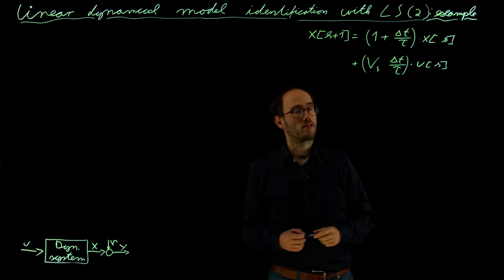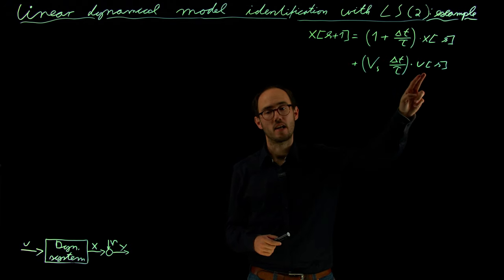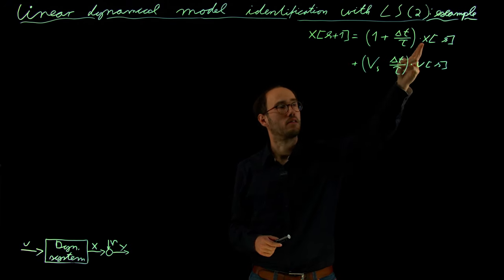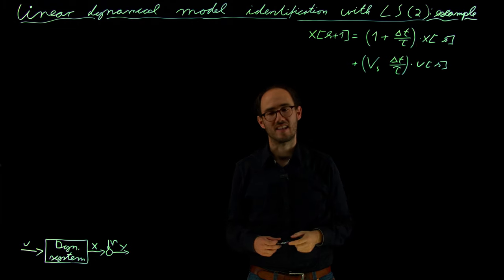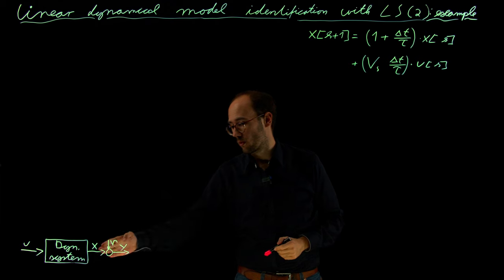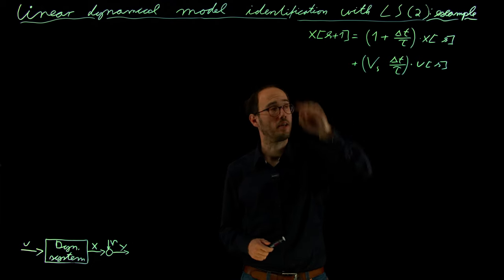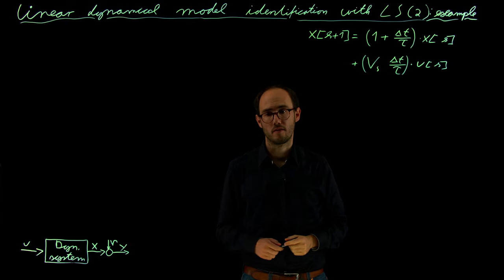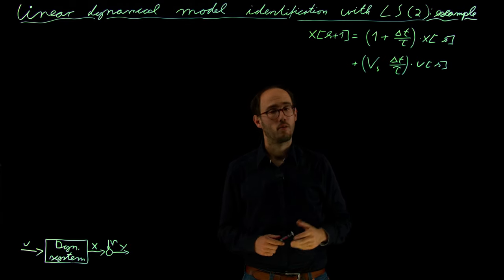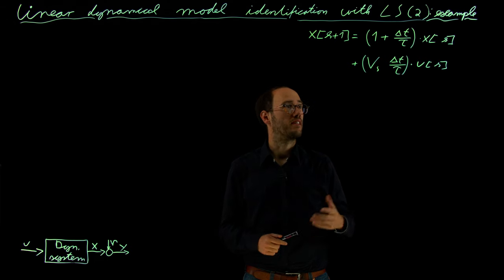In this video, we are considering a single input, single output system. That means that our input u is a scalar input and our state, which is also here considered as the output of our dynamical system which we want to identify, is also just a scalar quantity. Therefore, we have a first-order system, which is also called a PT1, a proportional delay element.